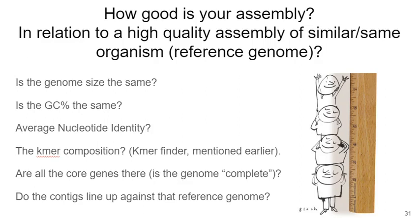In order to evaluate how good your assembly is, you want to compare it to another very high quality assembly from a similar, or in a perfect world, the same organism — what we call a reference genome. You want to ask: does your assembly show a genome of the same size as the reference? Is the GC composition the same? Are the average nucleotide identities the same or very similar? Is the K-mer composition the same? Are all the core genes there? Is the genome complete? And are the genes in more or less the right order relative to the reference genome — do the contigs line up appropriately when compared to a reference genome?